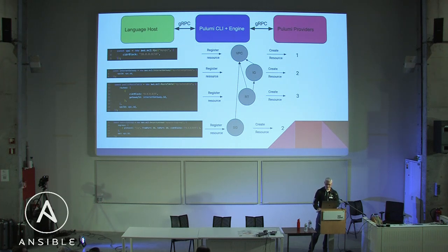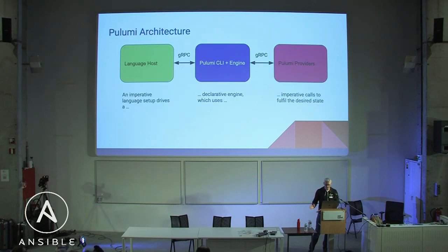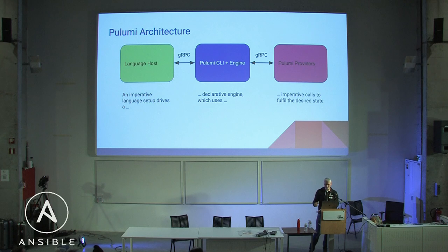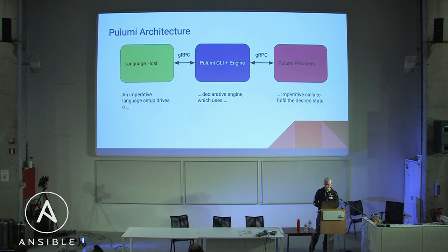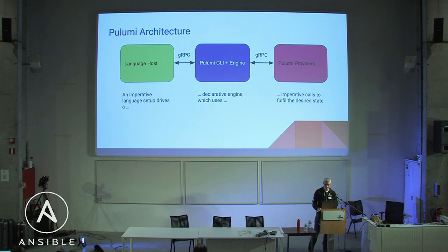The more complex your resource graph becomes, the more opportunity there is to run resource creation concurrently and reduce the time it takes for your infrastructure to come up. In short, Pulumi has an imperative language setup which drives a declarative engine, which in turn uses imperative CRUD calls — create, retrieve, update, delete — to fulfill the desired state. It's the engine that is key to making the whole setup behave declaratively.